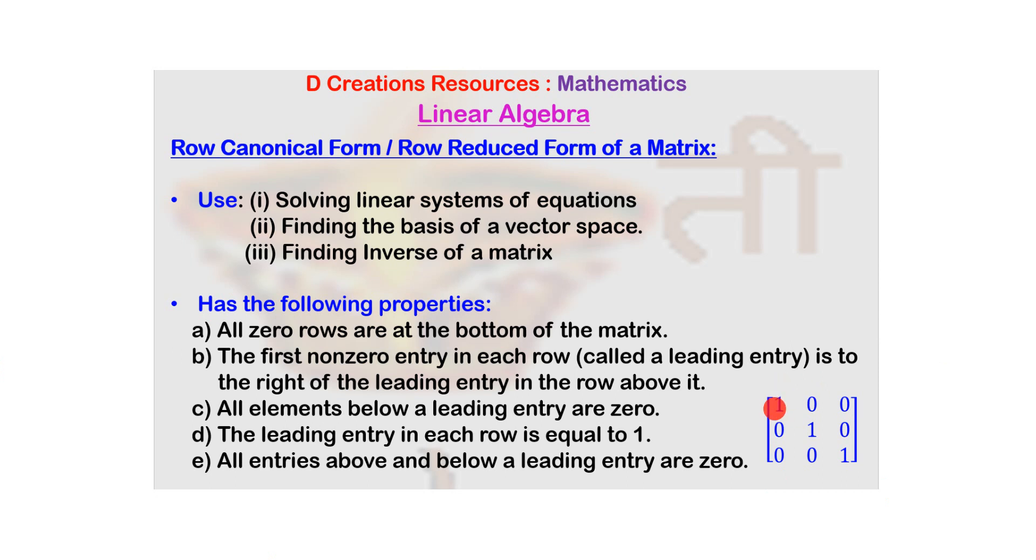The first non-zero entry in each row has to be to the right of the leading entry in the row above it and it has to be equal to 1. Also, all the elements below and above the leading entry have to be 0. So these are the characteristics.